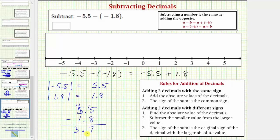So this difference is positive 3.7. But we still need to determine the sign of the original sum. The sign of the sum is the original sign of the decimal with the larger absolute value. So because negative 5.5 has the larger absolute value, this sum, which equals the difference, equals negative 3.7.